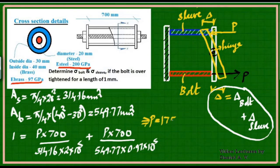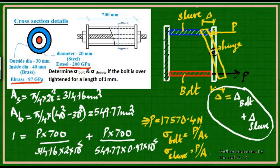Once we have P, stress is load by area. The load in the bolt is P, load in the sleeve is P. Stress bolt = P / area of steel, and stress sleeve = P / area of brass. Sigma bolt is 55.92 MPa, and stress in sleeve is 31.96 MPa.